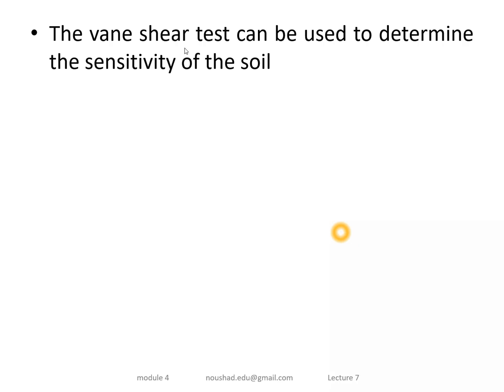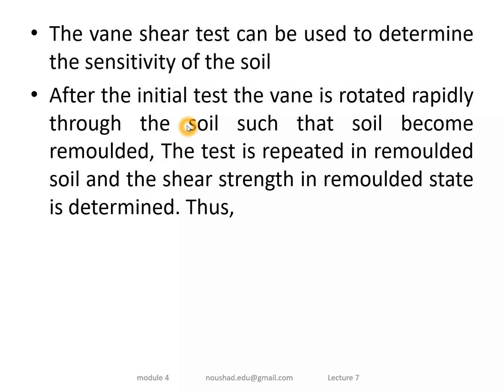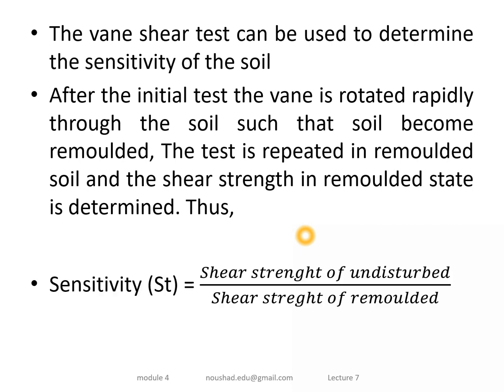This test can also be used to find the sensitivity of the soil. When we first do the test, the soil is in the undisturbed state and we record the undisturbed shear strength. Then the vane is rotated rapidly so the soil becomes remolded, and we measure the shear strength at the remolded state. Sensitivity equals undisturbed shear strength divided by remolded shear strength.